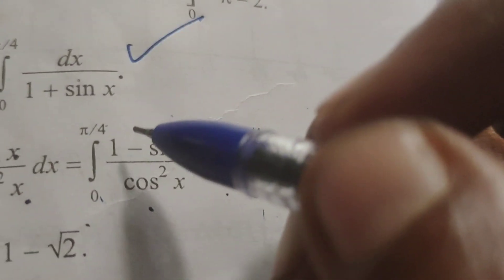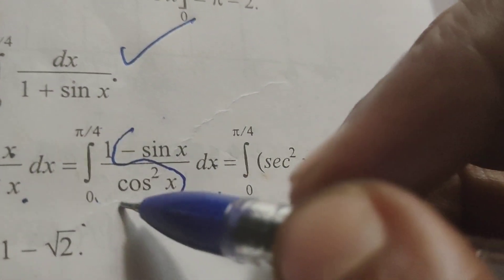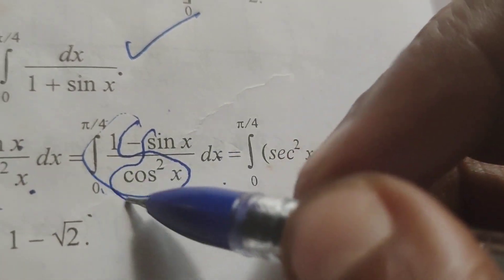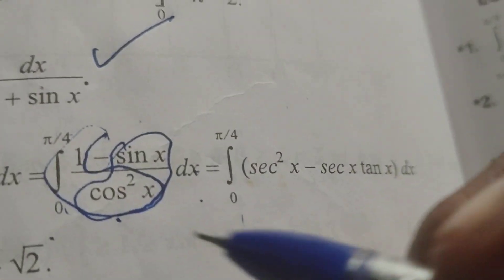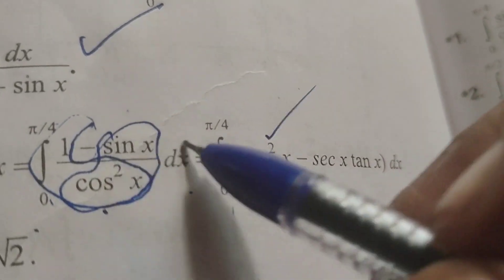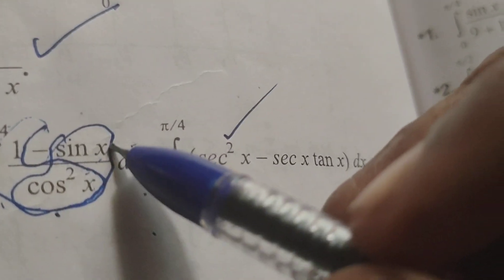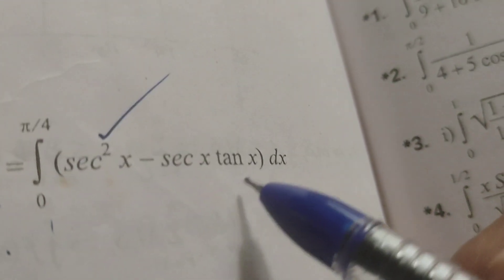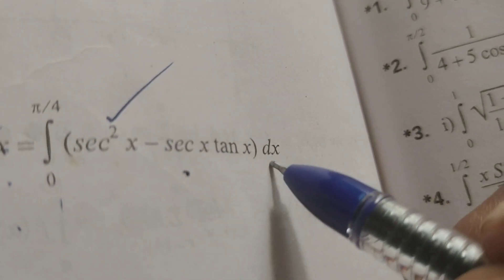Integral of 0 to pi by 4. Here separating numerator and denominator. 1 by cos square x is secant square x, sin x by cos x is tan x. Again 1 by remaining cos x is secant x into dx.